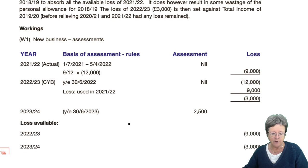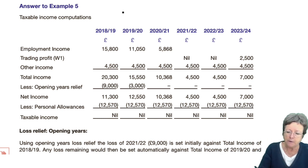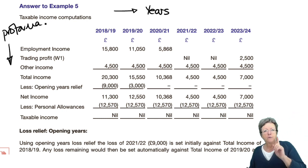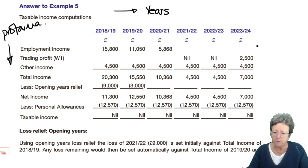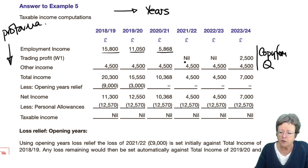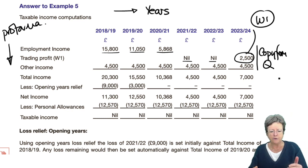Now let's do a working. Years across the top, pro forma down the side. First thing: set up your pro forma. Second thing: copy the question into the answer. She had employment income — copy those figures in. Don't fill in the subtotal yet because you're not sure what else is going to be done.